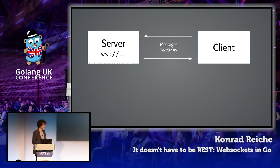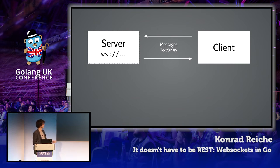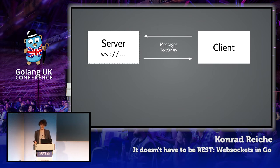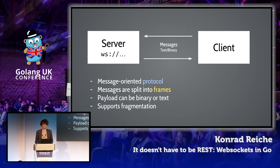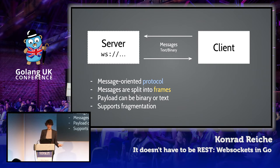We then have this architecture of a bidirectional communication channel. The distinction between server and client is only made at the opening handshake — after that, both parties can actively send and receive messages. At its core, WebSocket is a message-oriented protocol. Messages are split into frames. The payload can be either binary or text, which also means you can define your own sub-protocol. It supports fragmentation, which prevents the endpoints from too much buffering.